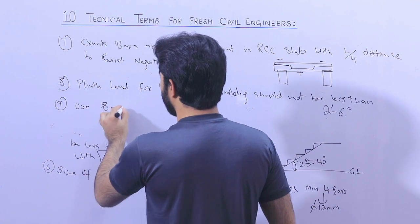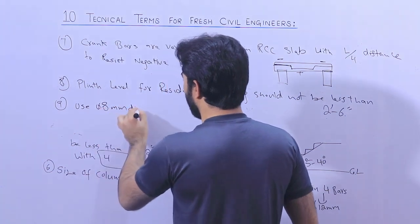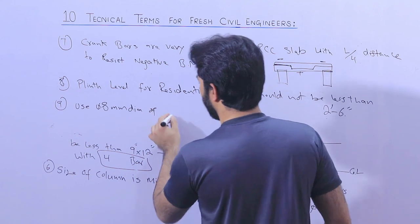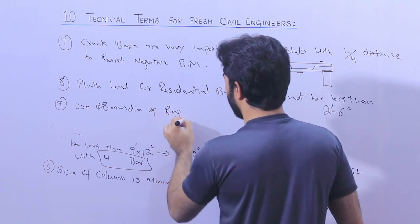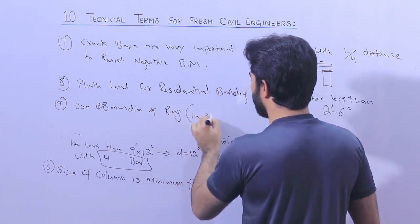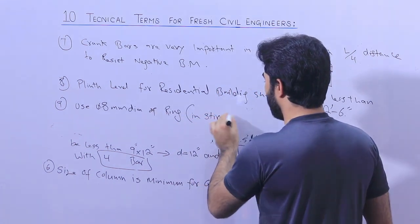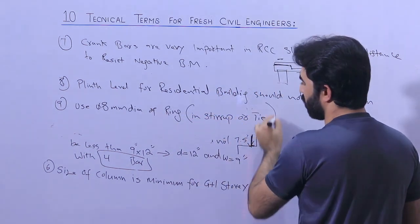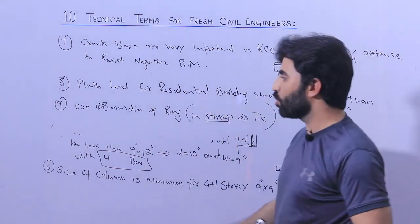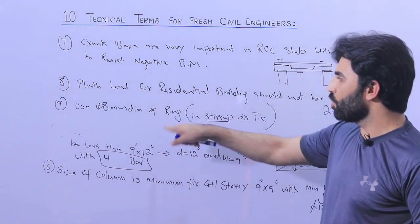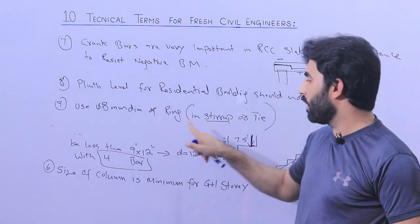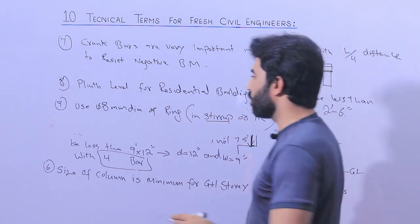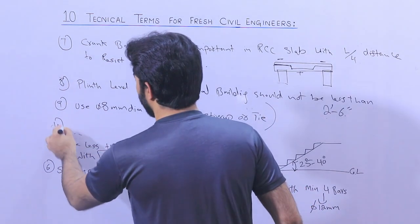The ninth term: use a minimum 8 millimeter diameter for rings and stirrups. Whether it is ties in a column, stirrups in a beam, the ring or tie diameter should not be less than 8 millimeters. This is also very important.